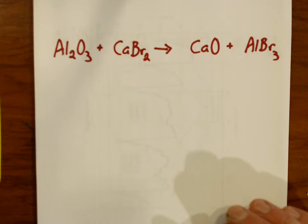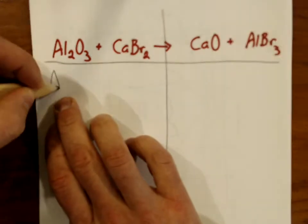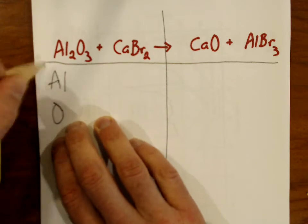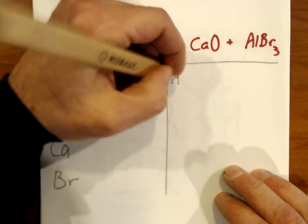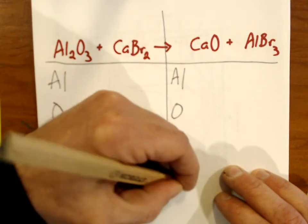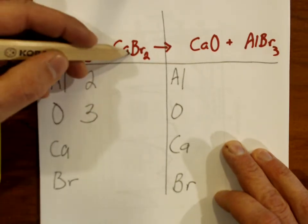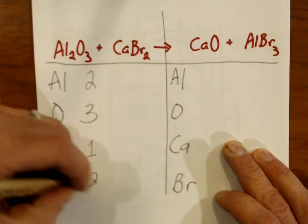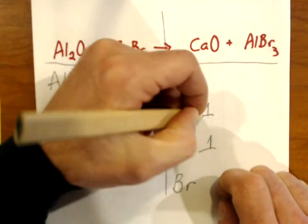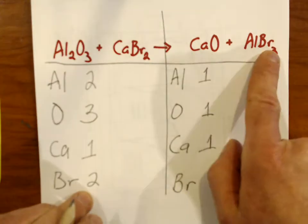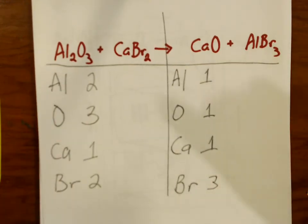This next one looks complicated and tricky — not necessarily. Let's draw a big line underneath and list the elements for our inventory. We've got aluminum, oxygen, calcium (Ca), and bromine (Br). We'll write the same list on the other side. Taking inventory: two aluminums, three oxygens, one calcium, and two bromines on the reactant side. On the product side: one calcium, one oxygen, one aluminum, and three bromines. Calcium is the only element that is in balance; all the rest are out of balance.